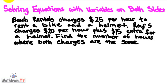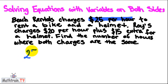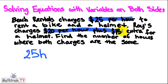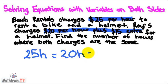So to set up our problem, we know that Beach Rentals charges $25 per hour. And then Roy's charges $20 per hour plus $15 extra, so that would be $20h plus $15.